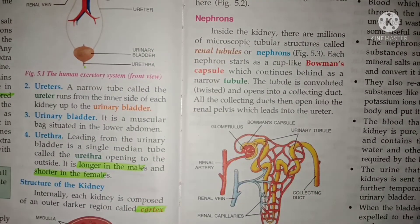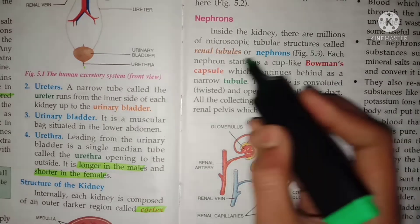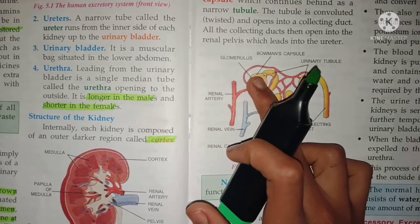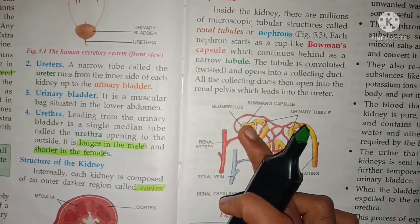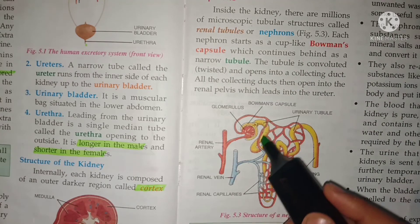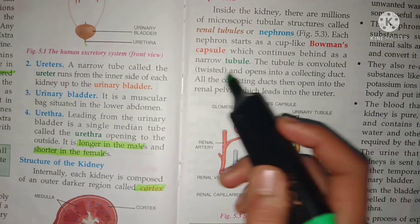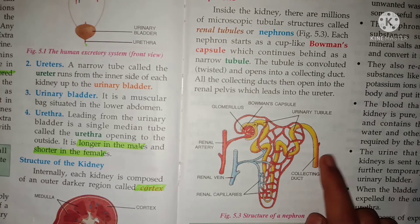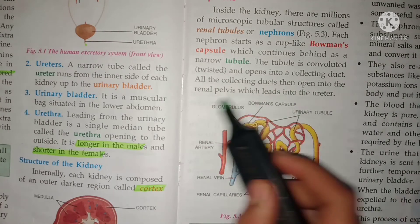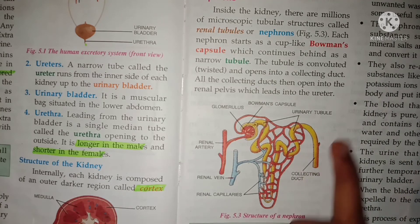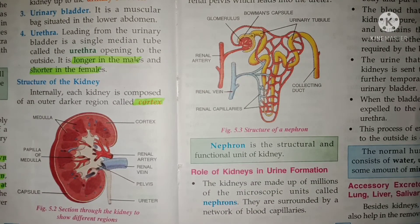The nephron is the structural and functional unit of the kidney. Inside the kidney there are millions of microscopic tubular structures called renal tubes or nephrons. Each nephron starts from a cup-like structure called Bowman's capsule, then continues as a narrow tubule which is twisted and opens into a collecting duct. All the collecting ducts then open into the renal pelvis, which leads to the ureter.